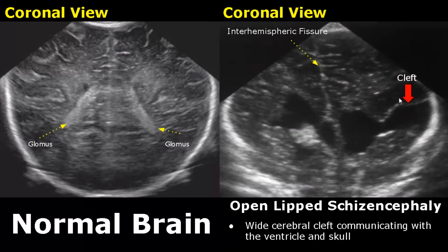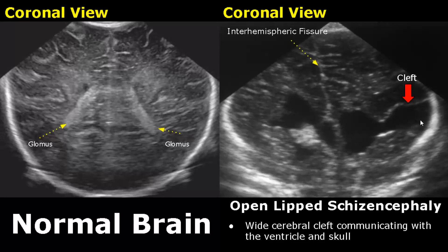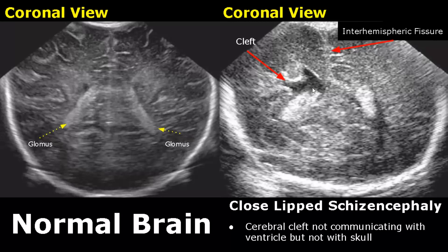In schizencephaly, clefts are found within the brain. It has two types: open-lipped and closed-lipped. In the open-lipped type, the cerebral cleft communicates with both the ventricle and the skull — the cleft has reached the skull bone. In the closed-lipped type, the cleft is connected to the ventricle but not the skull — the cleft is just around the ventricle.